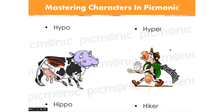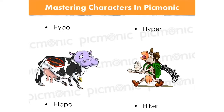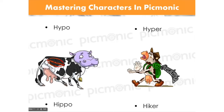Inside Picmonic and throughout this webinar I use the same images. Anything that's hypo or low uses a hippo — like hypocalcemia is represented by a hippo head and a calcified cow. Anything hyper uses a hiker — so hypercalcemia becomes a hiker with a calcified cow. That's how you can always tell which character is which.